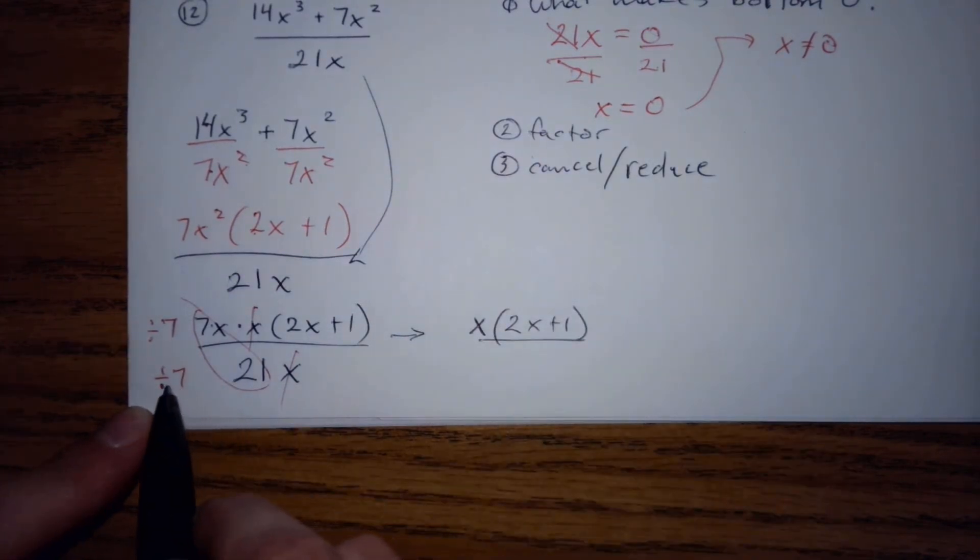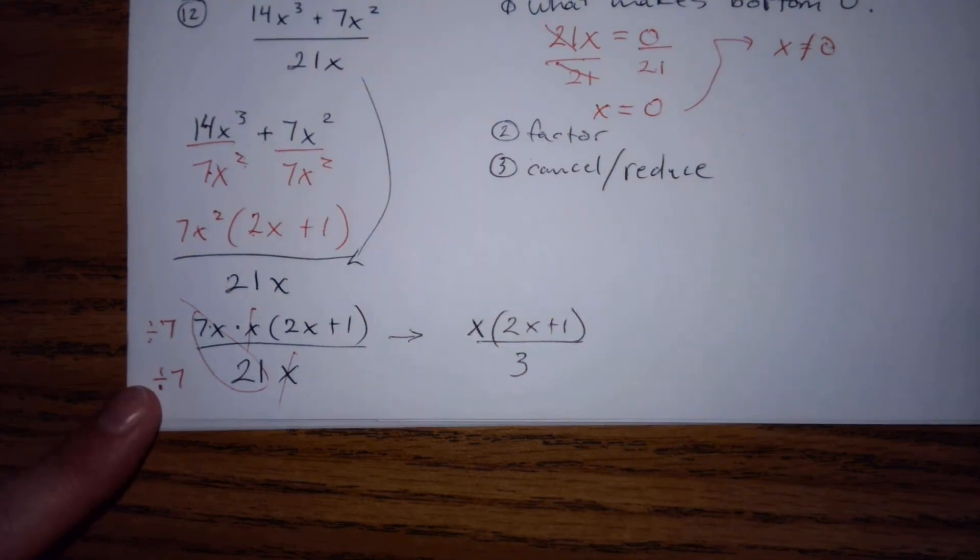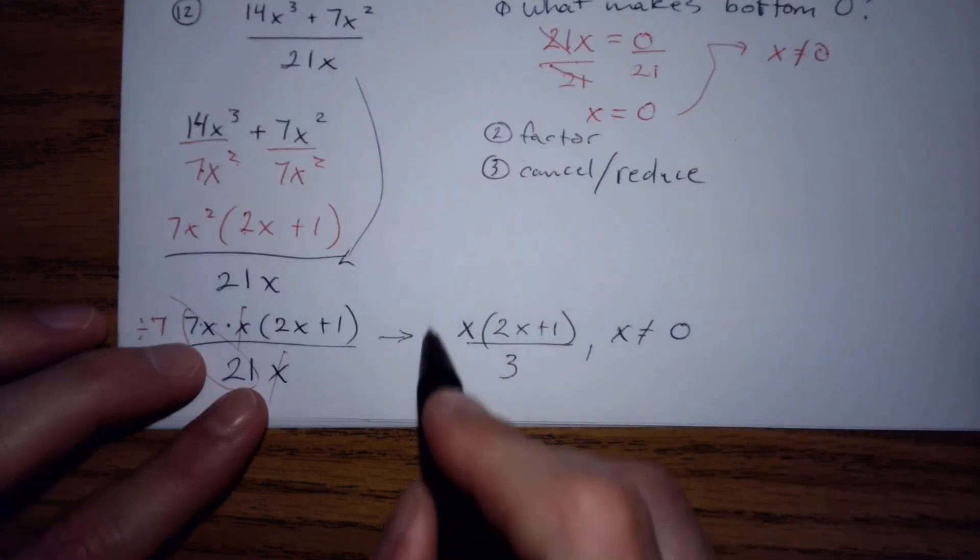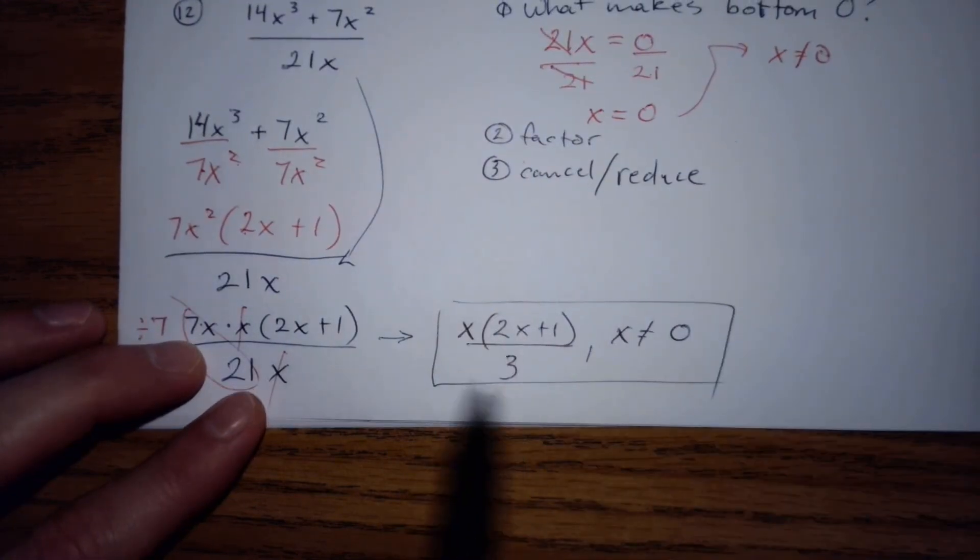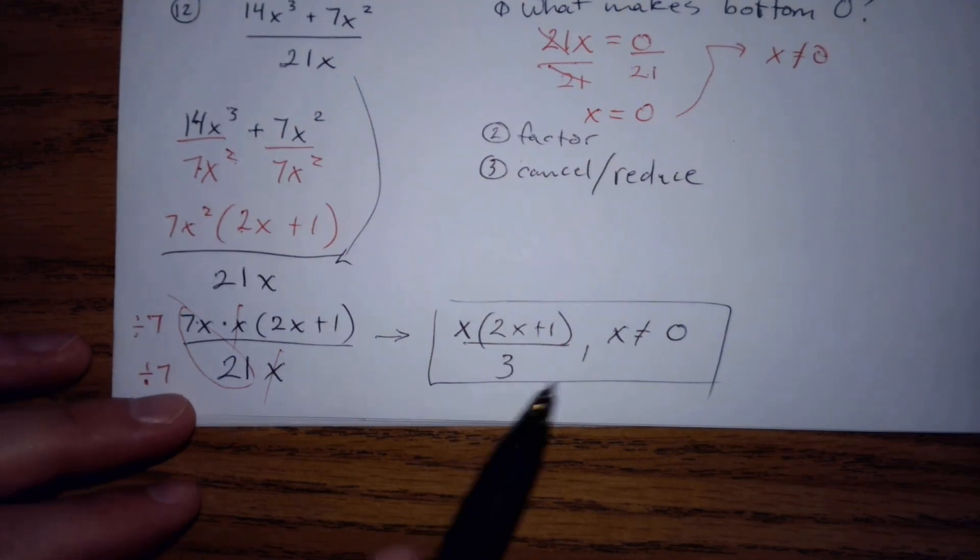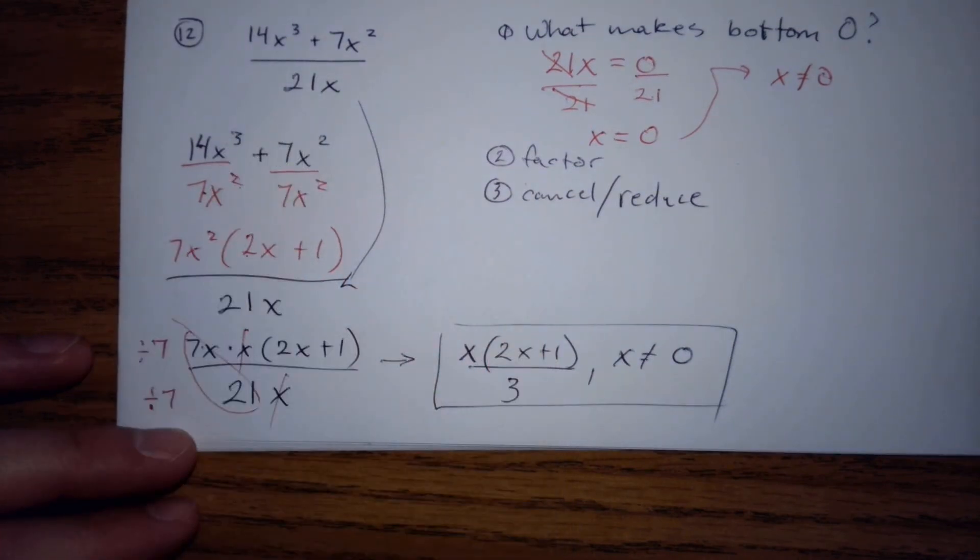And then 3 in the bottom. x not equal to 0. Even though if I plug in 0 here I don't have a problem, this should have the same restrictions as the original. And I'm not allowed to plug in 0 in the original.